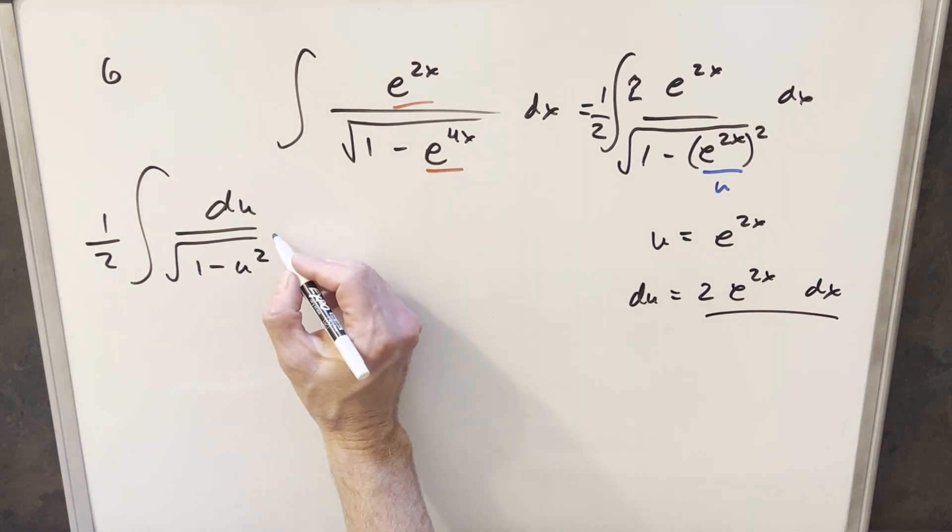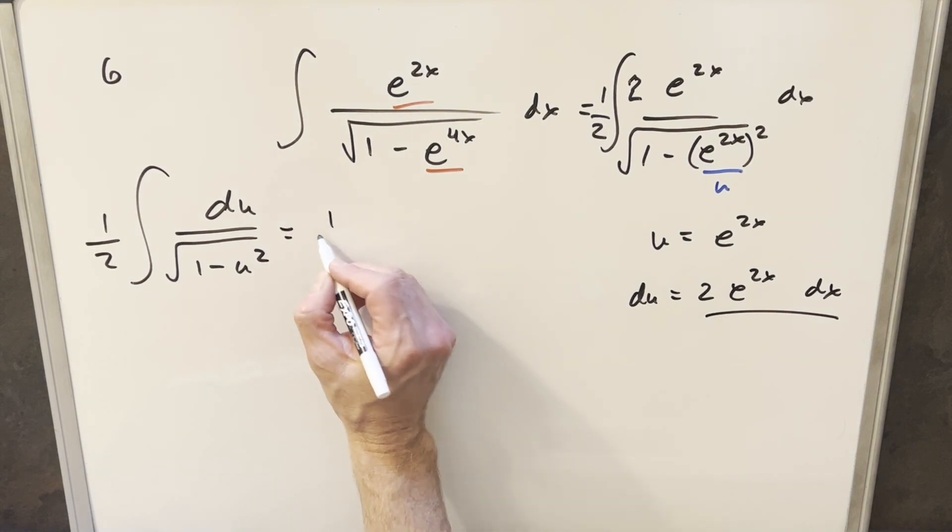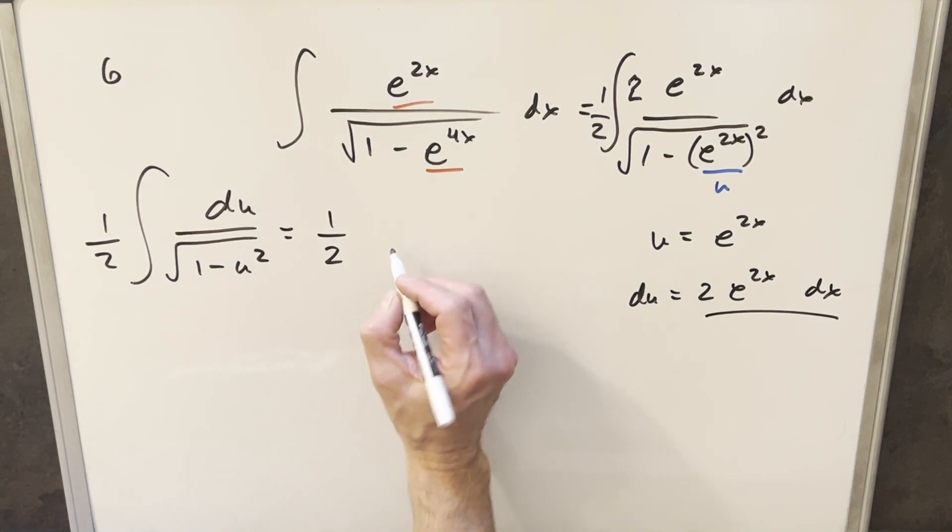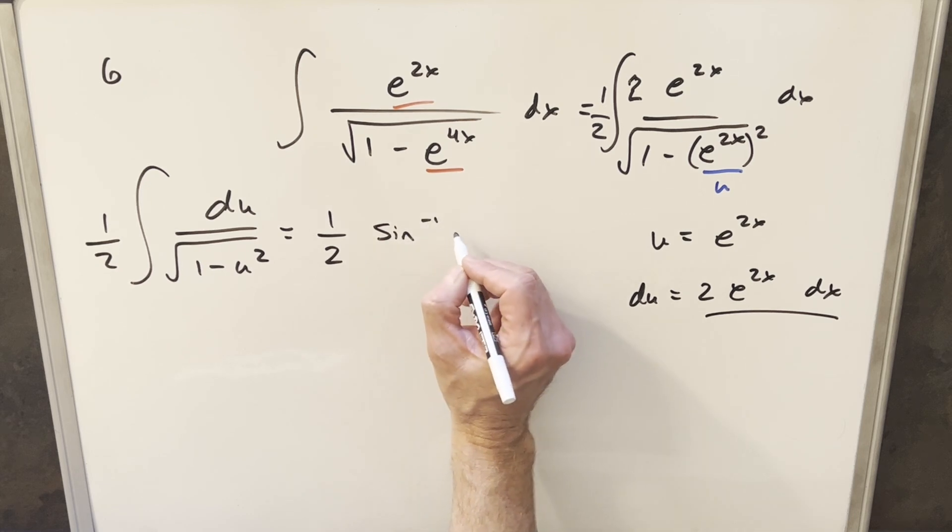But then this is a really common integral here. This is just going to be arc sine. So we're going to have, for our solution in u, we're going to have just arc sine of u.